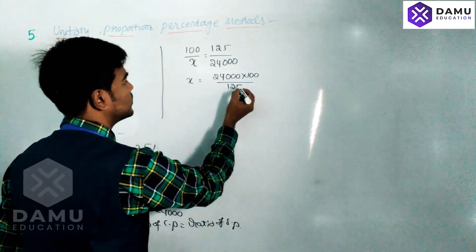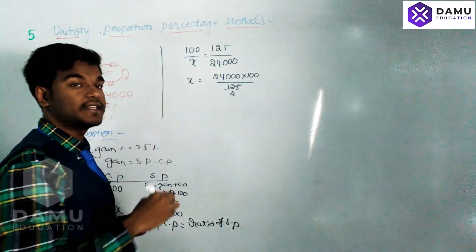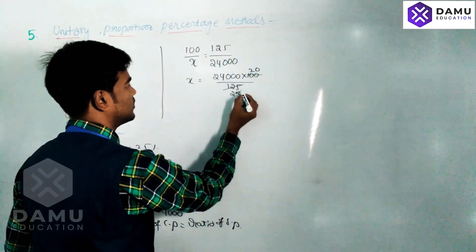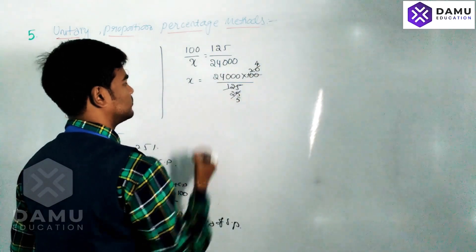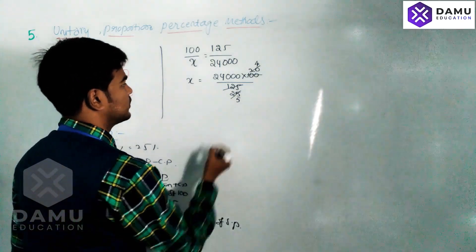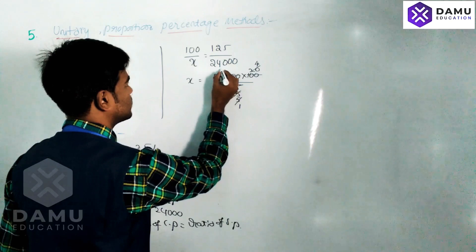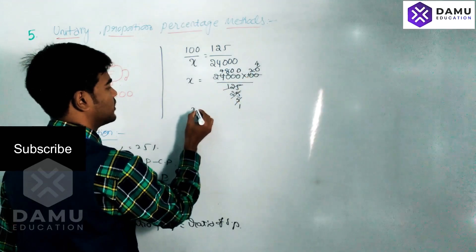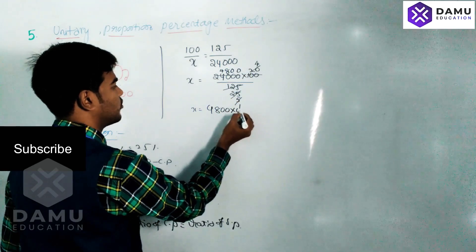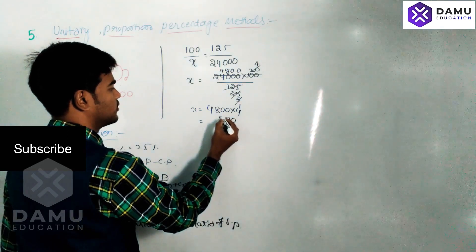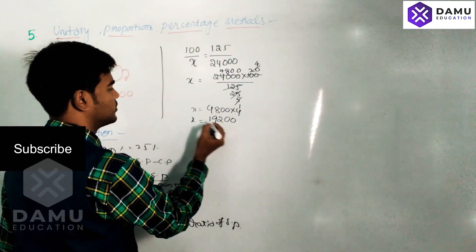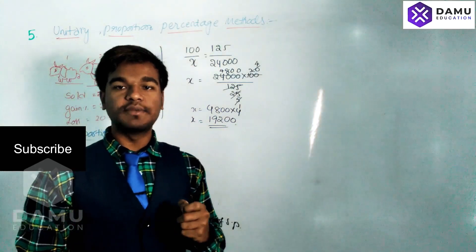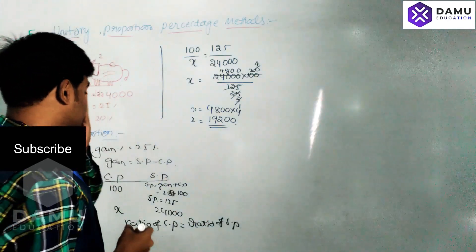Simplifying 24,000 × 100 ÷ 125, we get X equals 19,200 rupees. So the cost price of the first block is 19,200 rupees when the gain percentage is 25%.